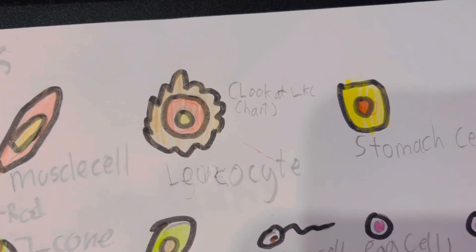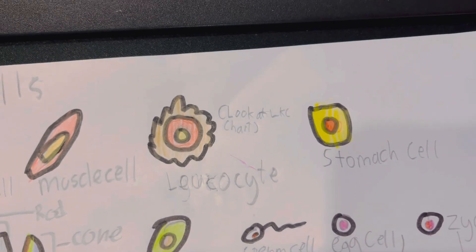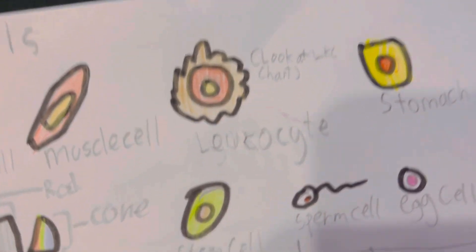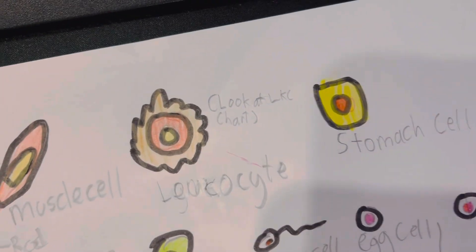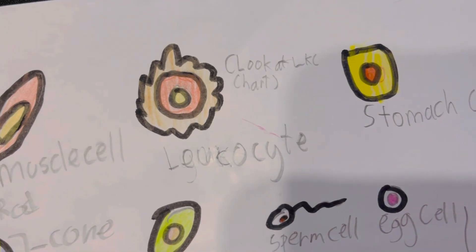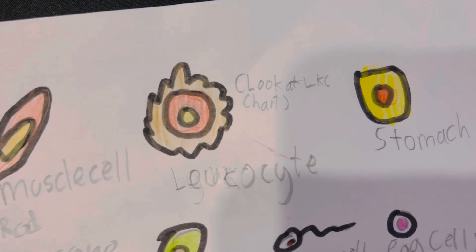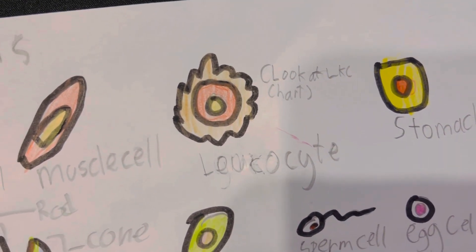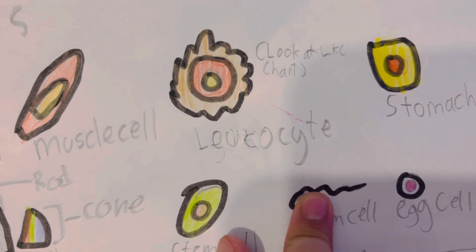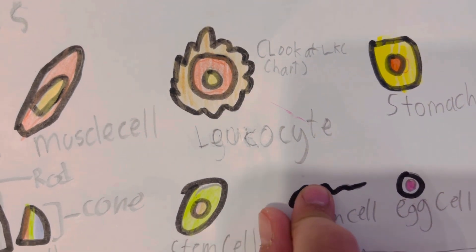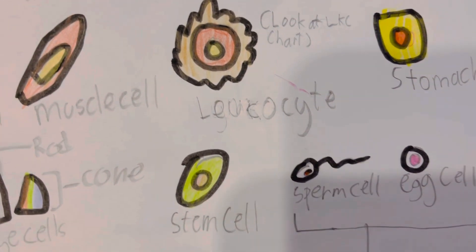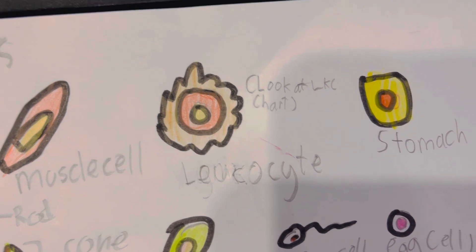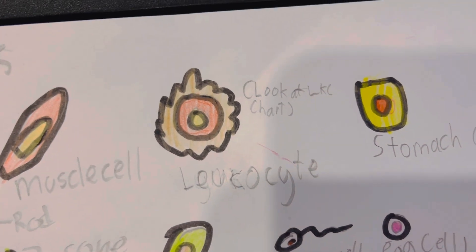Leukocytes. These are basically white blood cells. You can look at the leukocyte chart, which I showed in my first video about biology.